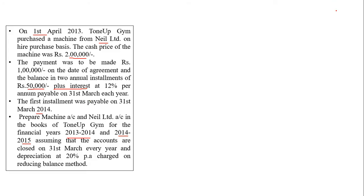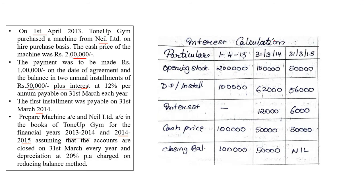Now let us see how to solve the sum. The very first thing we will do is make a table for calculation of interest, which I've already done, so I'm going to explain how to solve that particular interest calculation table. The heading is 'Interest Calculation.' We have columns for: 1st April 2013, 31st March 2014, and 31st March 2015, because two years of data is given. Rows include opening balance, down payment, installment, interest, cash price, and closing balance. The cash price of the machine — the opening balance — was 2 lakhs. In the first year we made a down payment of 1 lakh. On the day you purchase you make the down payment; there is never interest on that day. So cash price is 1 lakh, meaning 2 lakhs minus 1 lakh gives a first closing balance of 1 lakh.